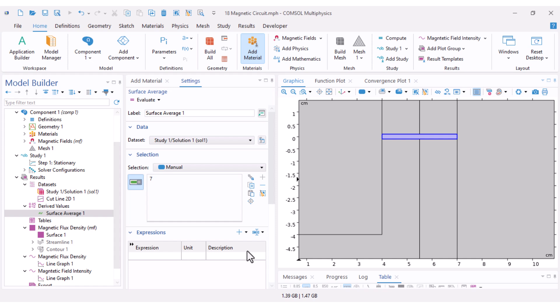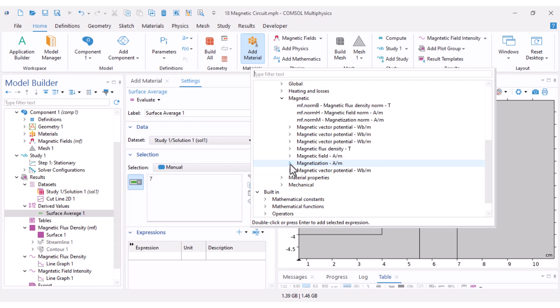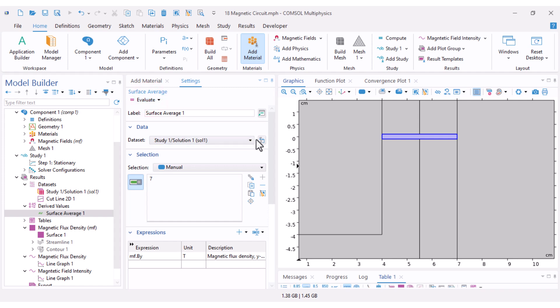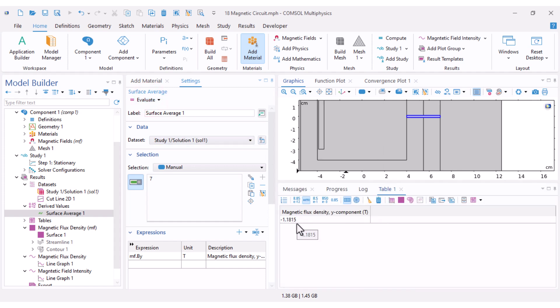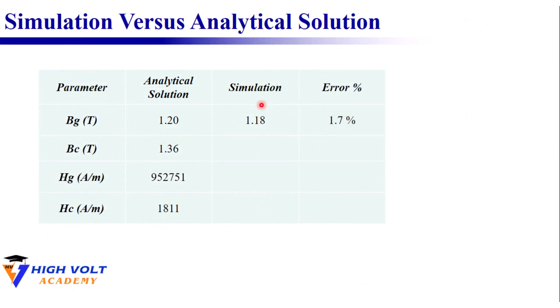I select the air gap and for the expression under magnetic flux I select magnetic flux density in the y direction which is By. Click Evaluate. It's 1.18 tesla. Comparing 1.18 tesla from simulation with 1.20 tesla from analytical, that's only about 1.7 percent error. Remarkably close.